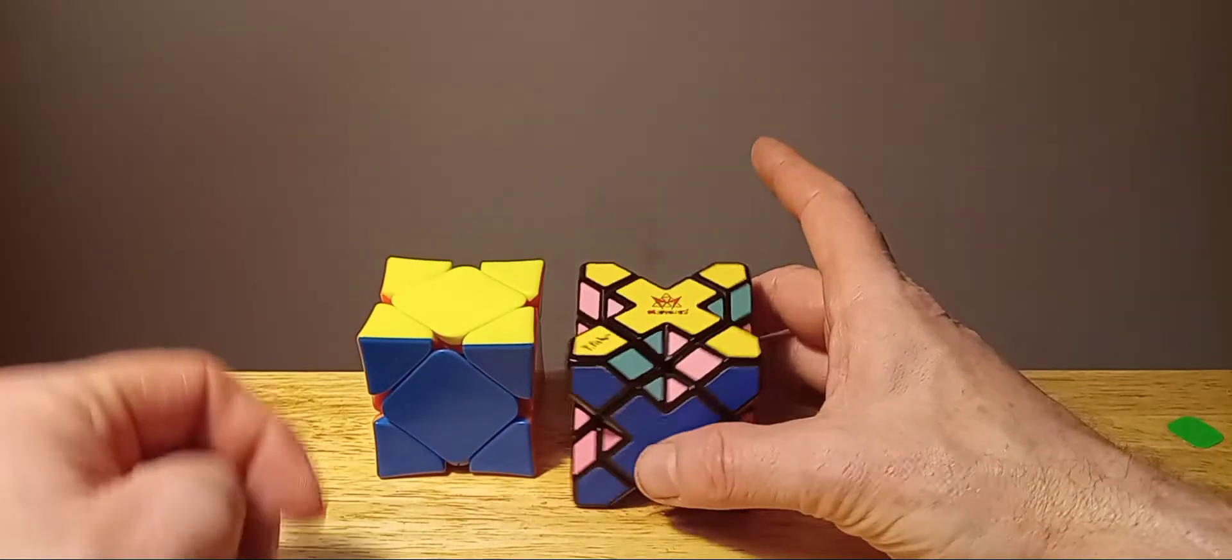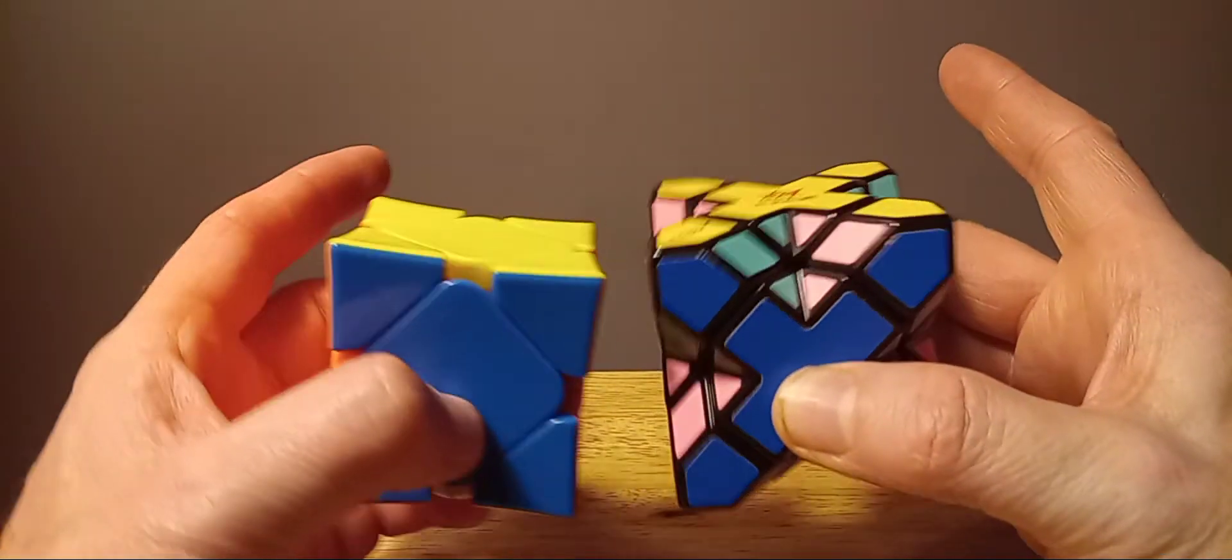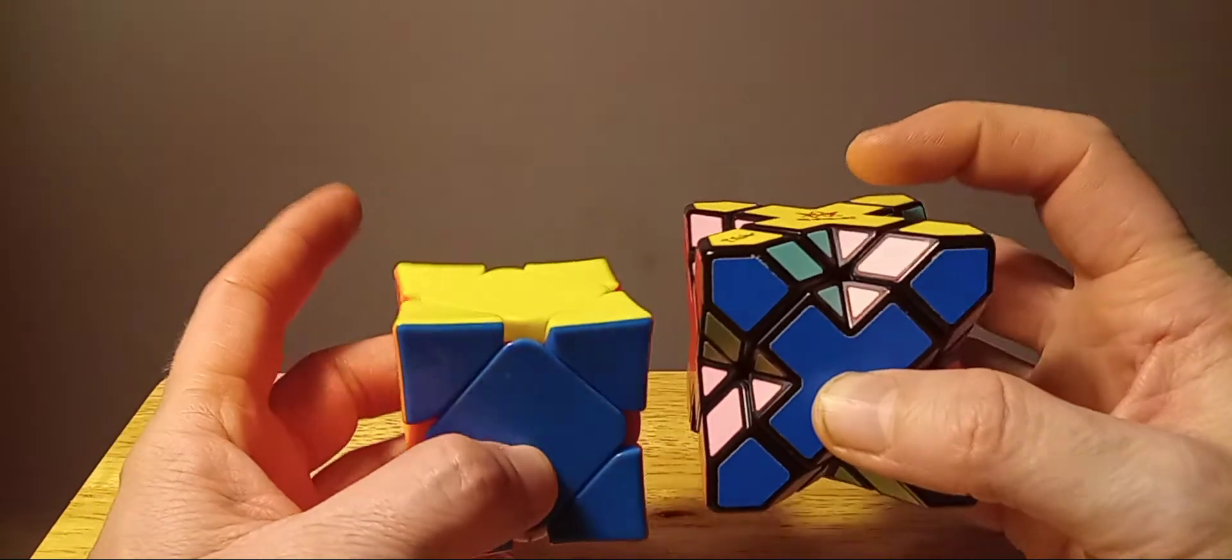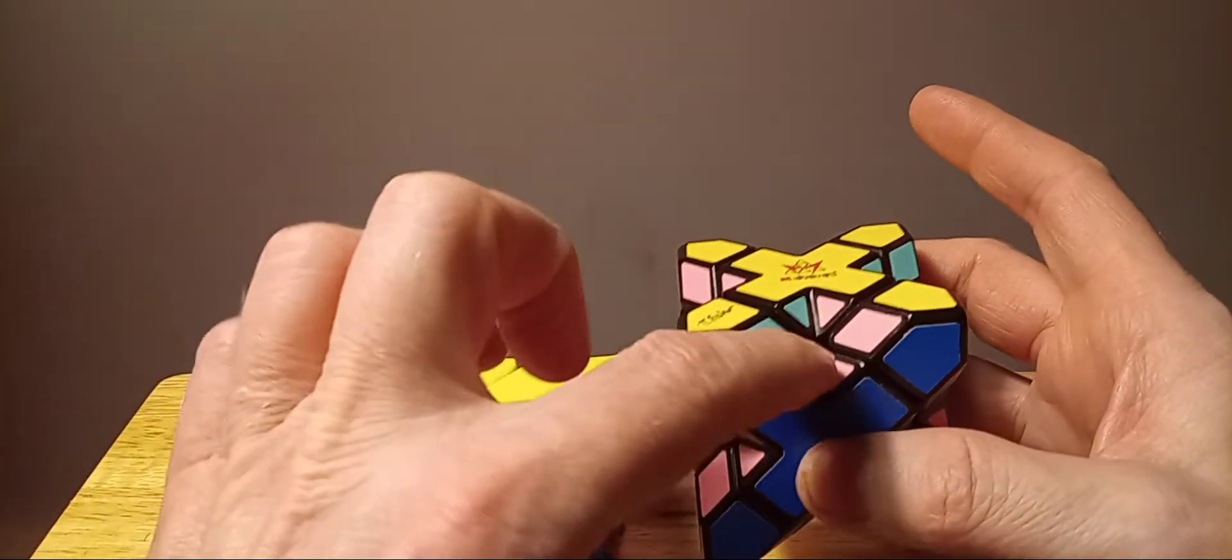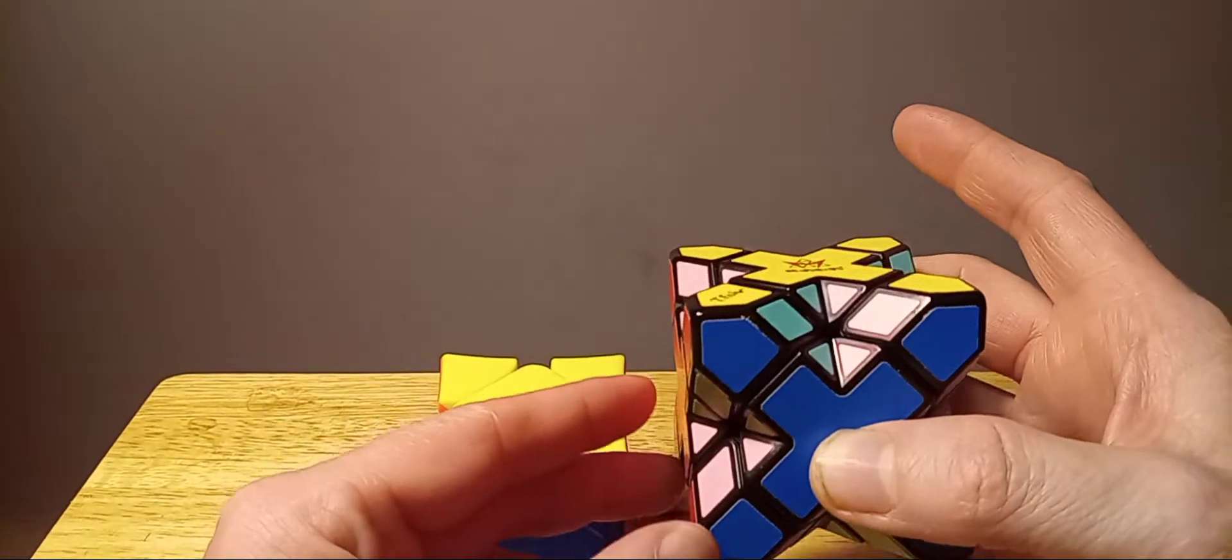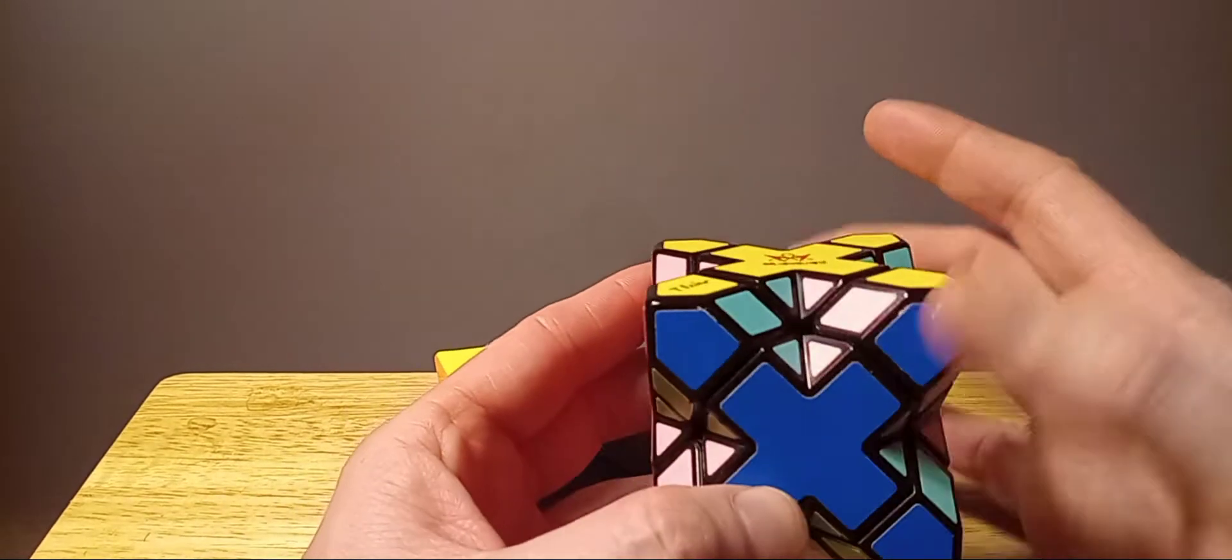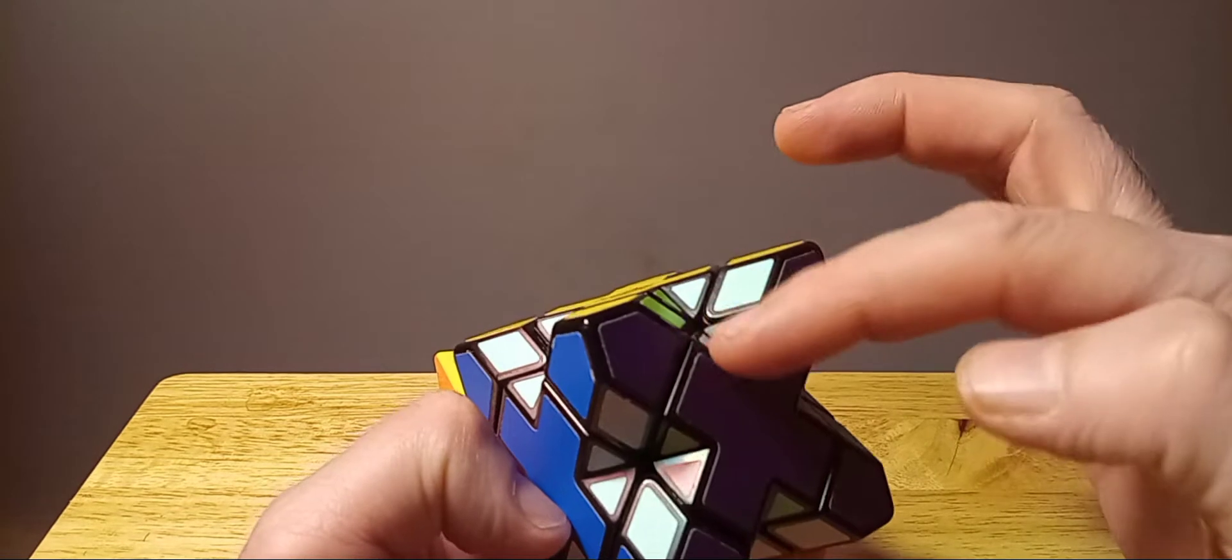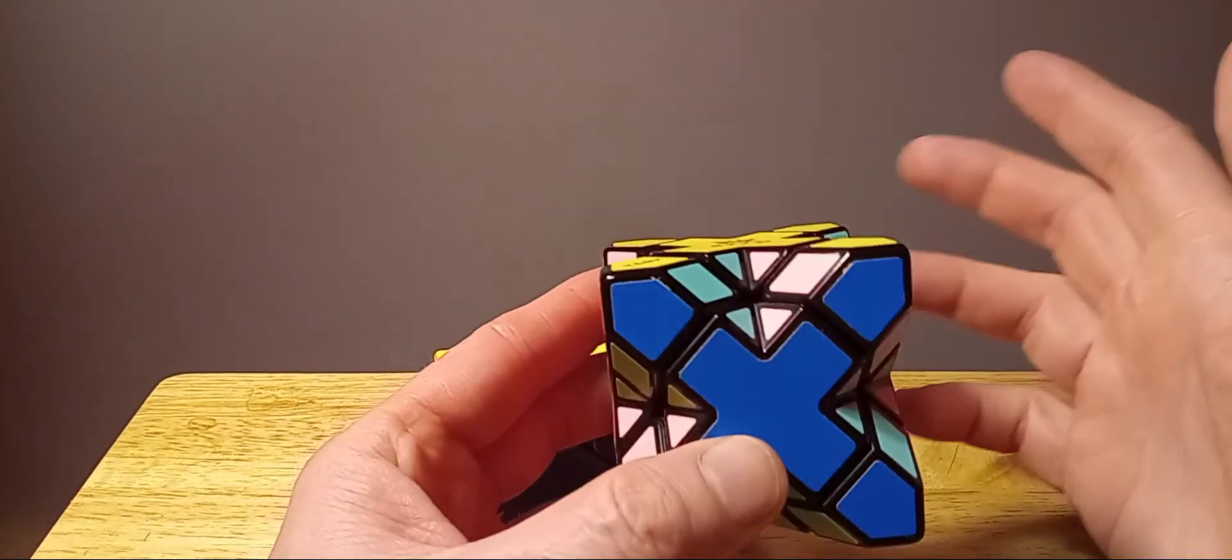So this is the Skewb Xtreme here and this is a regular Skewb. They're both Skewbs, the only difference is they have these stickers here and I'm doing a tutorial just to help you learn how to solve not only the whole puzzle but especially these centers here with the stickers.